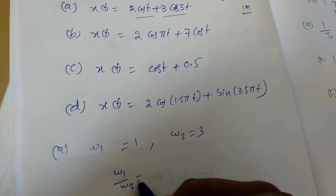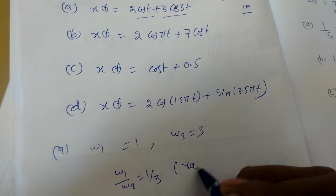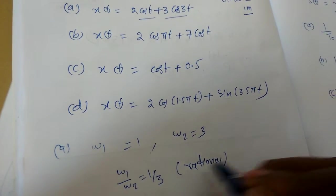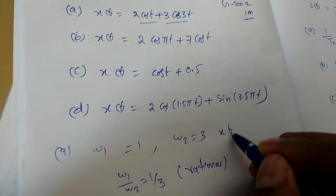So omega 1 by omega 2, which is nothing but 1 by 3, which is a rational number. So I can say, first one, x of t is periodic.